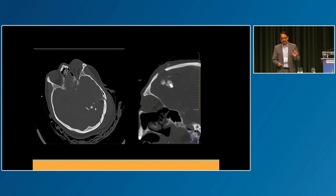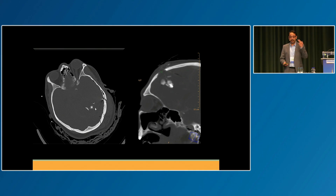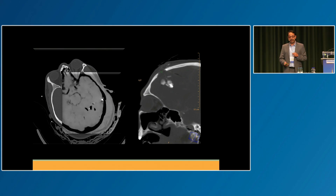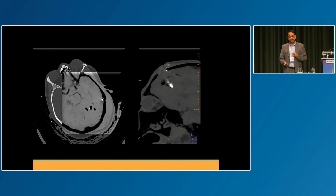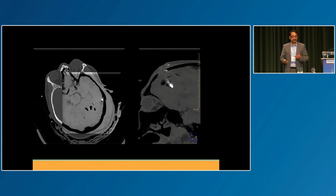One interesting use of calcium suppression is separating bullet fragments from bone fragments. In these two separate gunshot cases to the head, you apply calcium suppression and the bone suppresses — goes black — while the bullet remains white. I hope you don't see much of this here; I see this every day, so I need to get good at it.